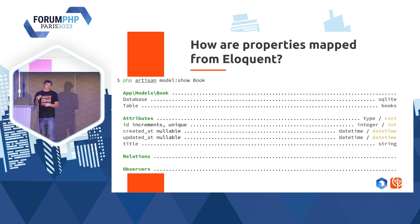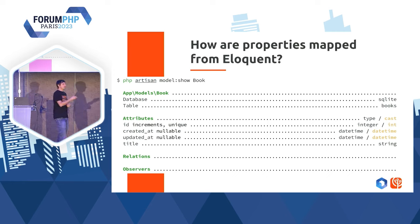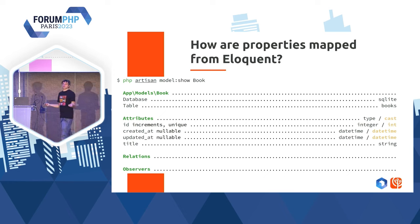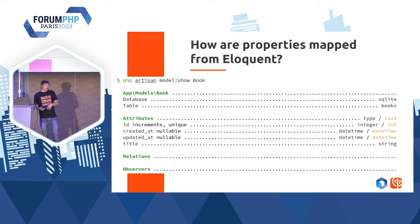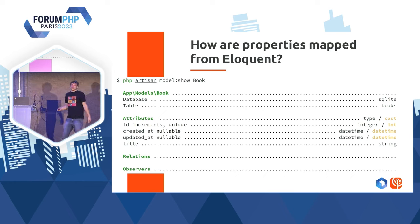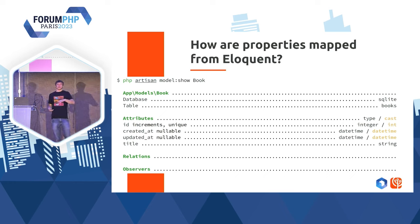Une question qu'on peut se poser : dans Laravel API Platform, vous avez bien les propriétés qui sont mappées avec les bons types dans des schémas JSON, par exemple sur votre documentation. Pour faire ça, je me suis basé sur la commande `artisan model:show Book`, qui va venir me lister les propriétés. J'ai pris le code, j'ai copié-collé, ça fonctionne.